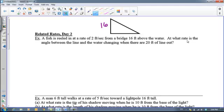And we want to find out at what rate is the angle between the line and the water changing, so I'm going to put a little theta here as the angle between the line and the water. And that tells me, that's my question, that's what I want to know, I want to know the rate of the change of the angle, so d theta dt equals what?